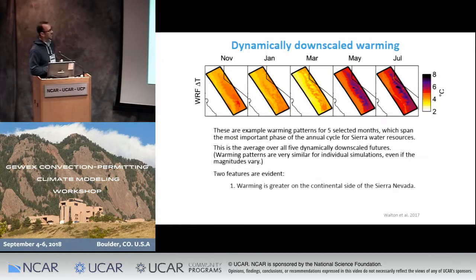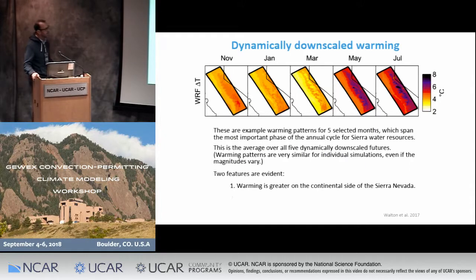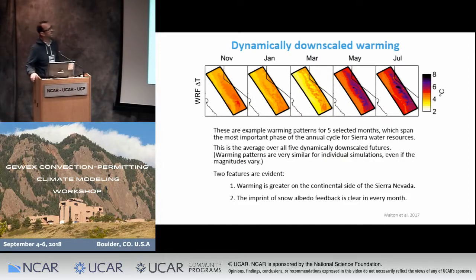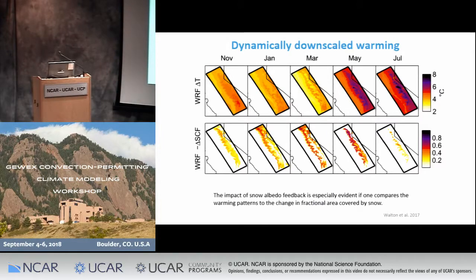One thing you can see is that warming is often a bit greater on the continental side of this very high mountain barrier. You can also see the imprint of snow albedo feedback. Especially if you look at a month like March, you see the rings of this mountain chain with elevated warming associated with snow albedo feedback in the WRF simulation. This snow albedo feedback signal is very evident in the corresponding change in snow-covered fraction — you see this big retreat of snow and then the enhanced warming in these middle elevation areas in the Sierra Nevada.